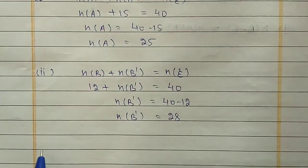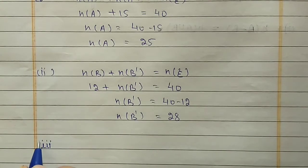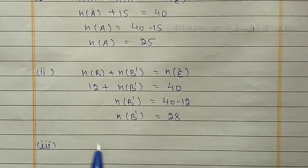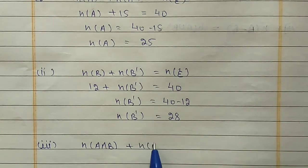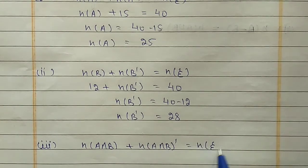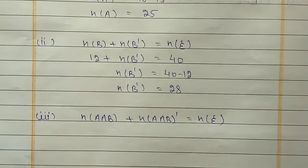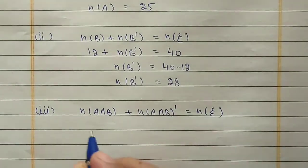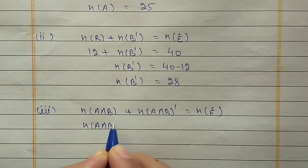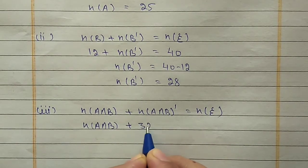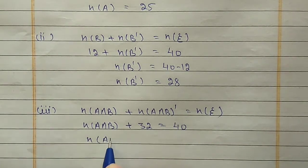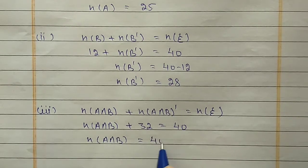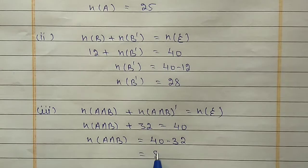For the third part, N(A∩B): using the same property N(A∩B) + N((A∩B)') = N(U). N((A∩B)') is 32 and N(U) is 40, so N(A∩B) = 40 - 32 = 8.